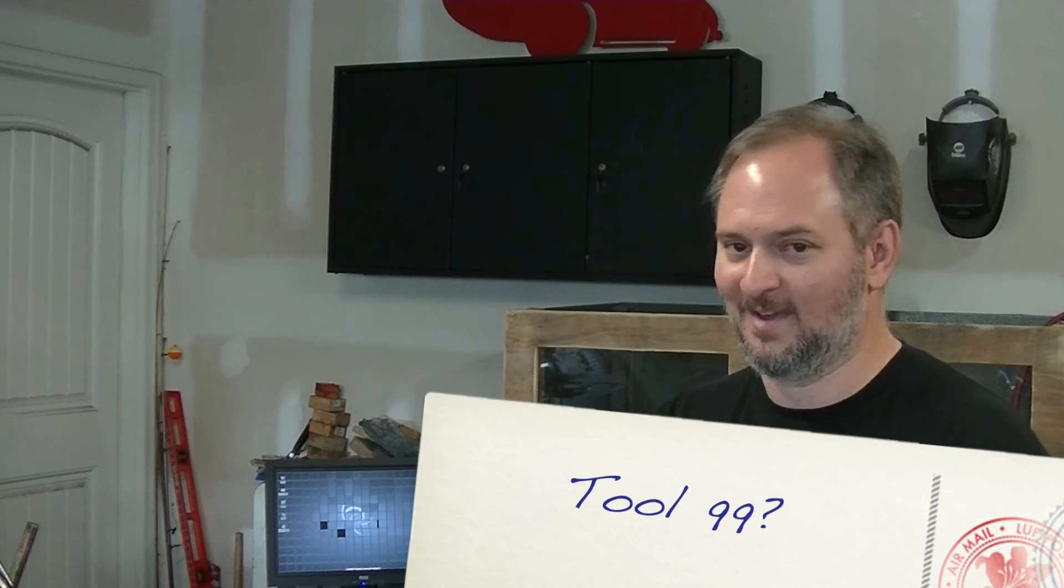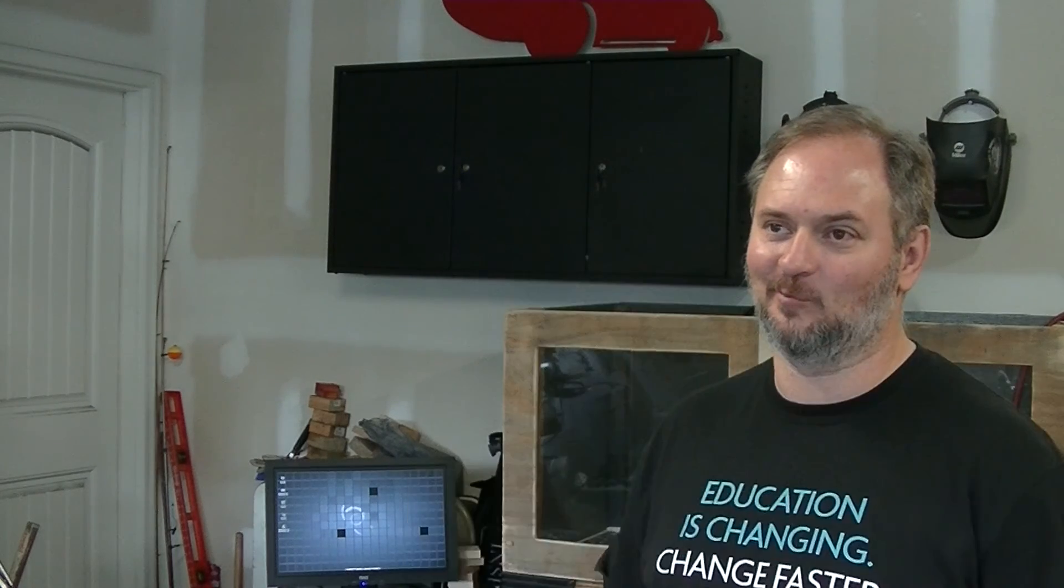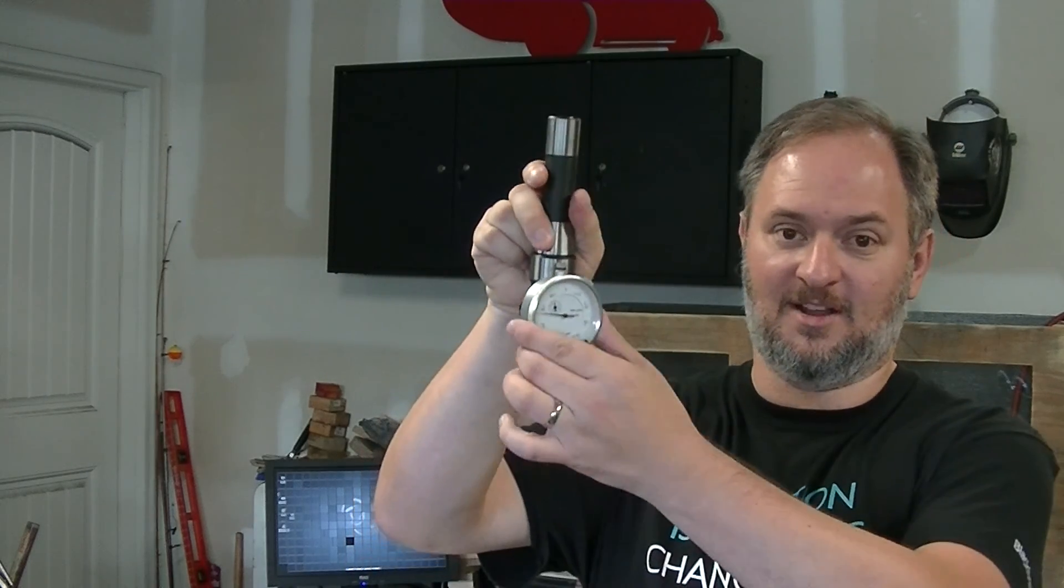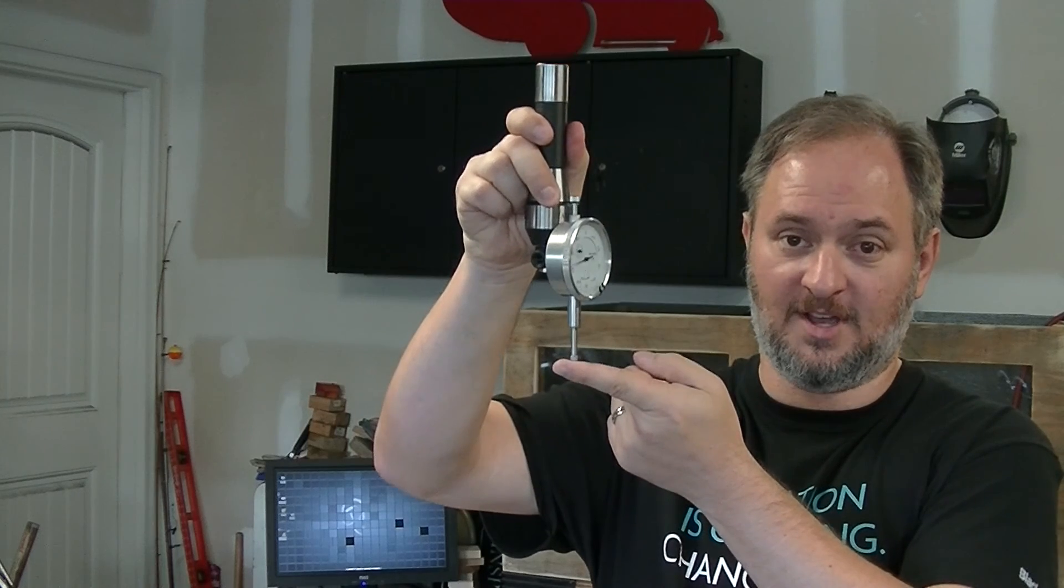Oh yeah, one more thing, for those of you asking about the tool 99 thing, it was kind of a joke. John, the way he has his library set up, especially for the class, is that tool 99 is the Z height setter. Yes, he has timer probes and all this stuff, he's not going to have that out for the classes. So, tool 99 is literally just a dial indicator, so that you can set your Z height.